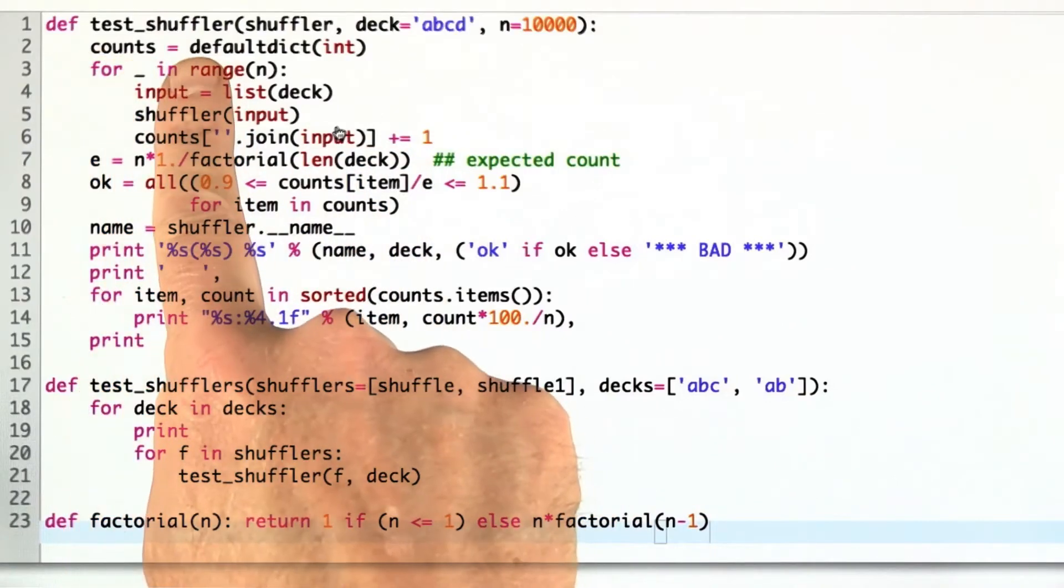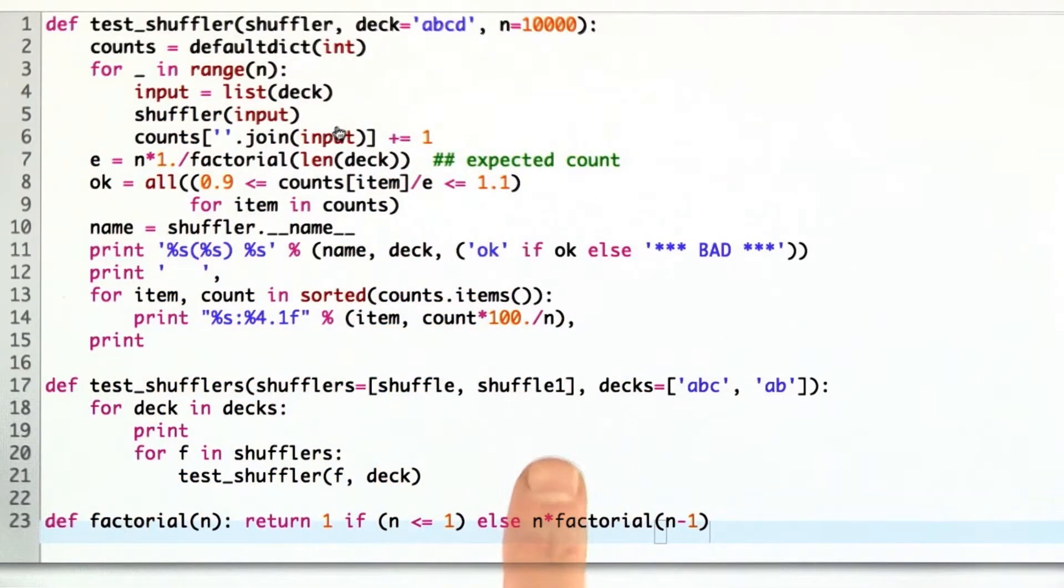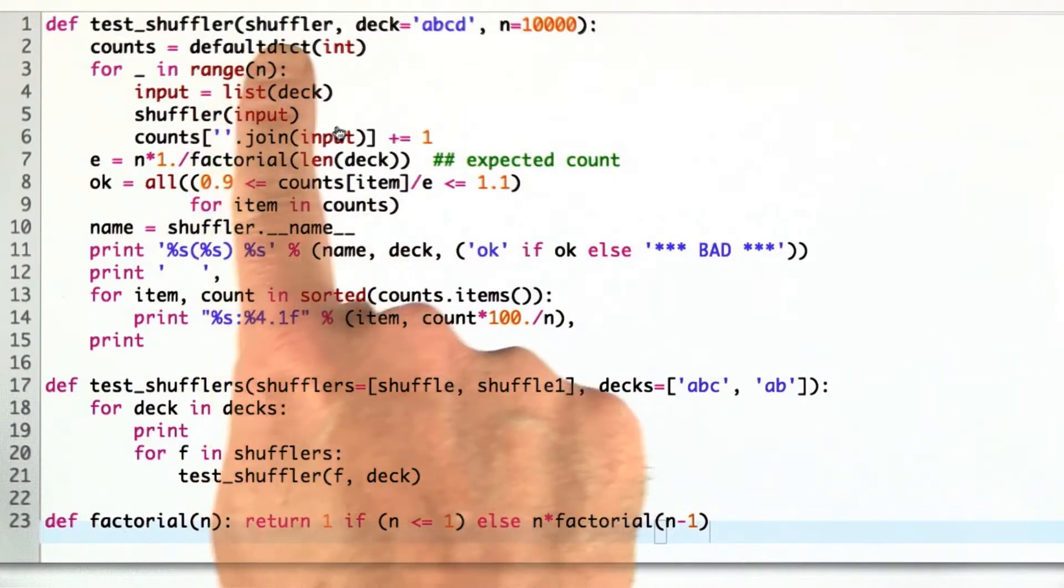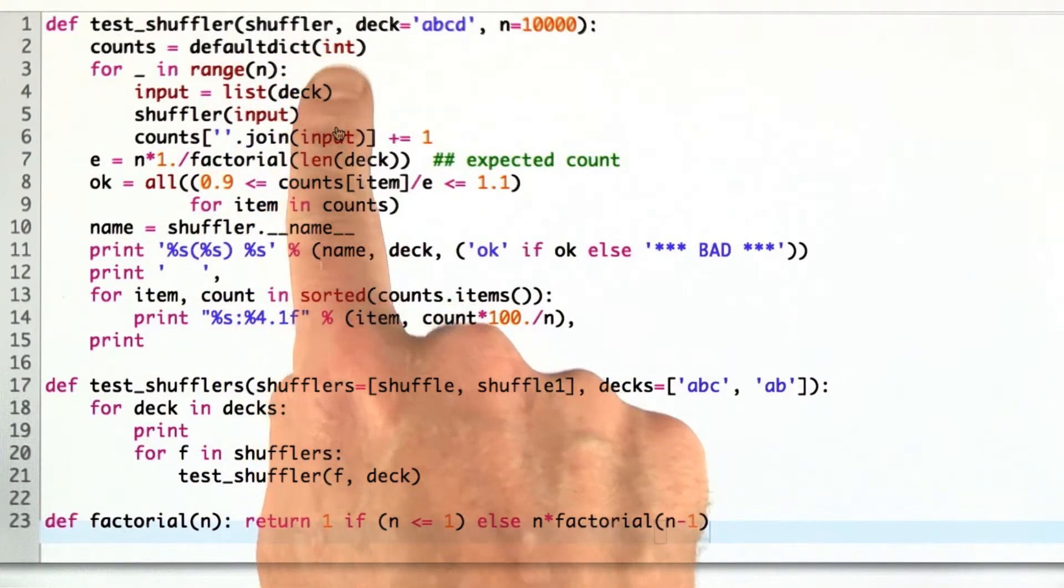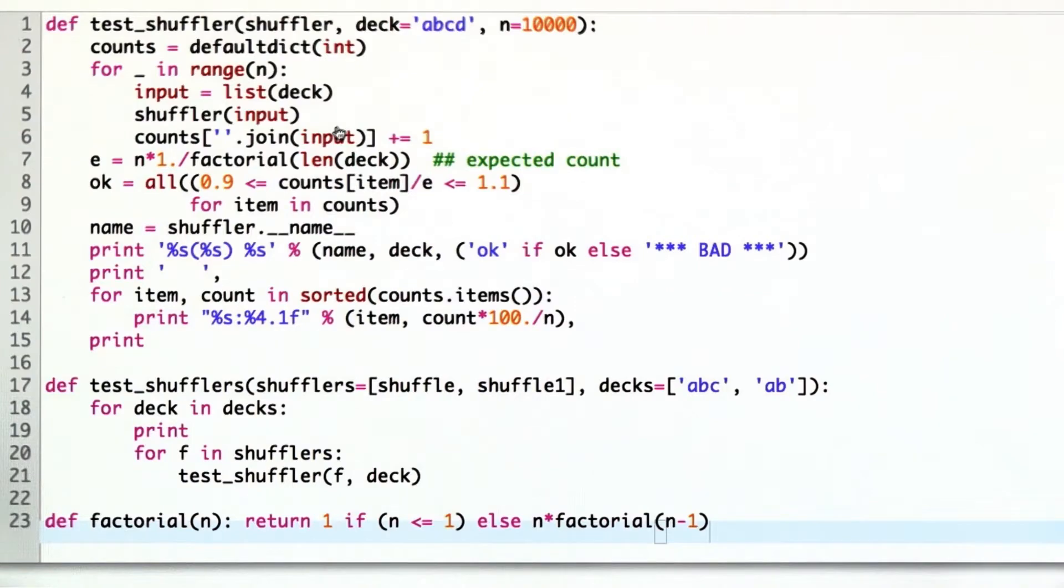Now I'm going to show you this program, TestShuffler, that produces the output you just saw to see if a shuffle program is correct if it comes up with a balanced set of results.